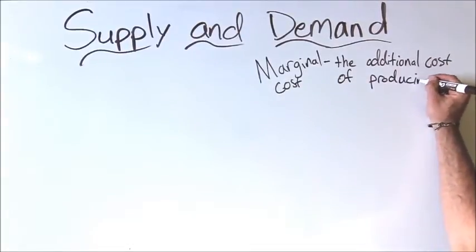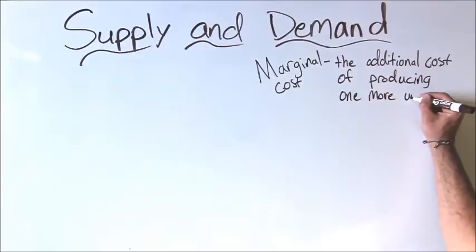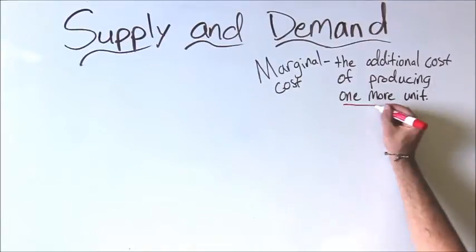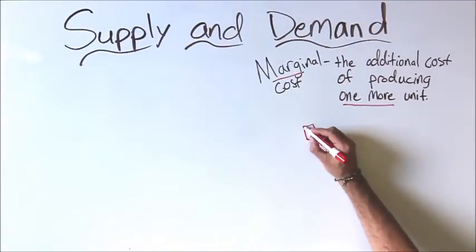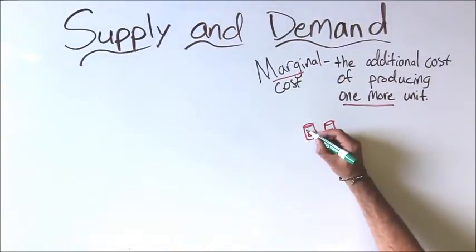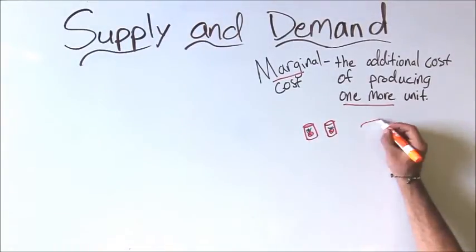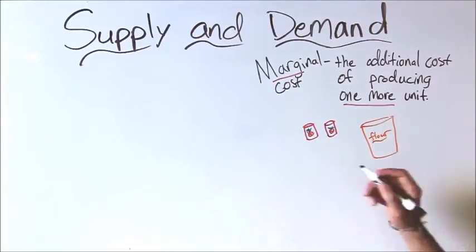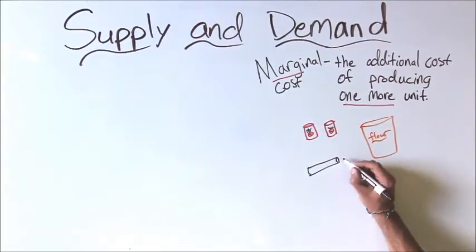Continuing with our example of pizza slices, the marginal cost of producing a slice of pizza includes the cost of things such as tomato sauce, flour, cheese, and other ingredients for the pizza, the cost of capital equipment like rolling pins, ovens, and pizza pans, and the cost of labor, including paying the chefs, cooks, delivery persons, and managers.